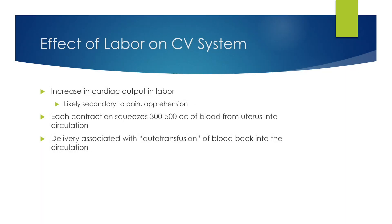In terms of the cardiovascular system during labor, there is an increase in cardiac output, likely secondary to pain and apprehension. Each contraction squeezes 300-500 cc's of blood from the uterus into the circulation. Delivery itself is associated with an autotransfusion of blood back into the circulation after delivering the baby and placenta.